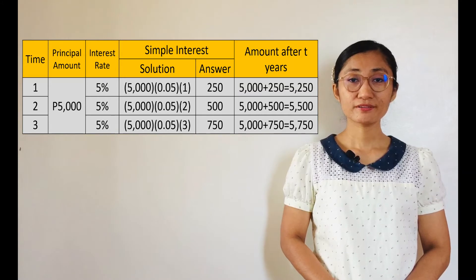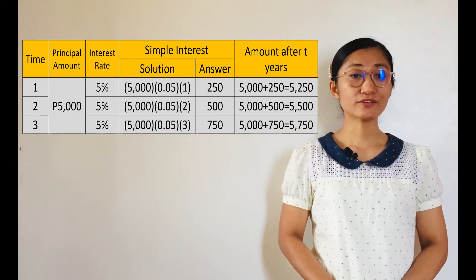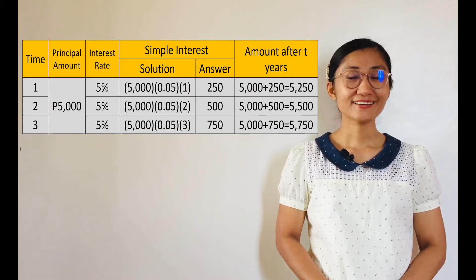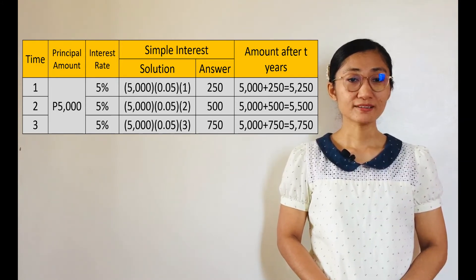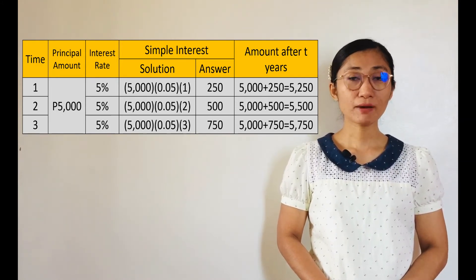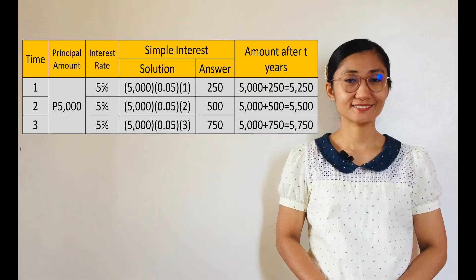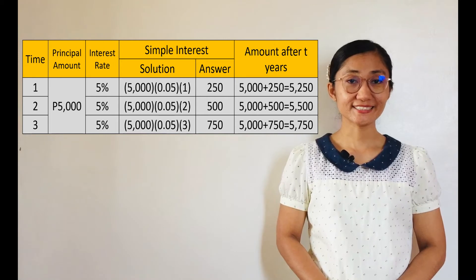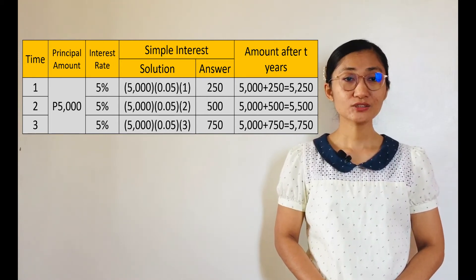Notice from the table that for each year, the simple interest rate and the amount are computed based on the same principal amount and the same rate over the years. The simple interest does not depend on the previous year, but is constantly computed by multiplying the principal amount by the interest rate and the time in years. The amount is computed by adding the simple interest constantly to the original amount.